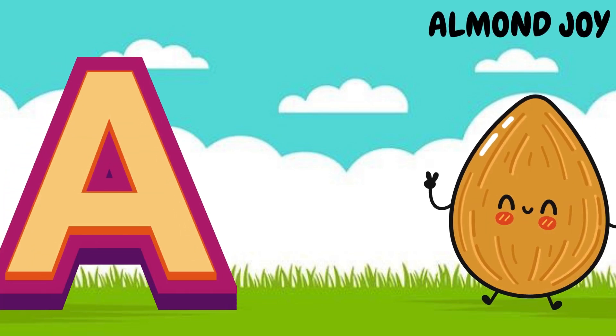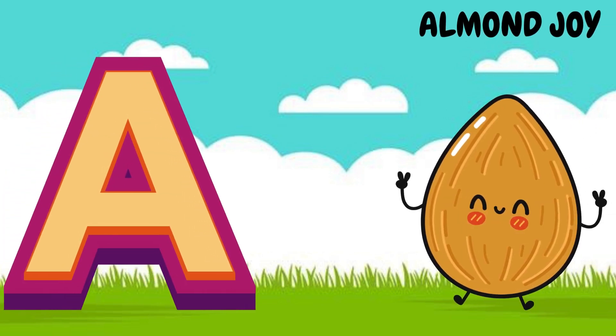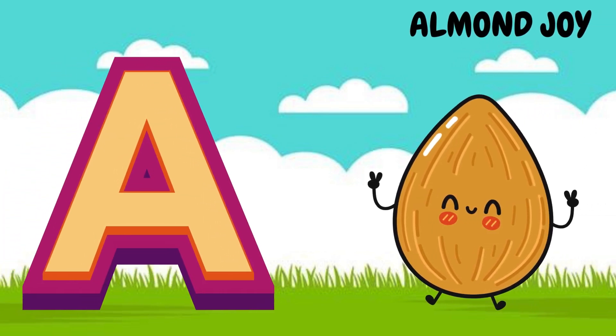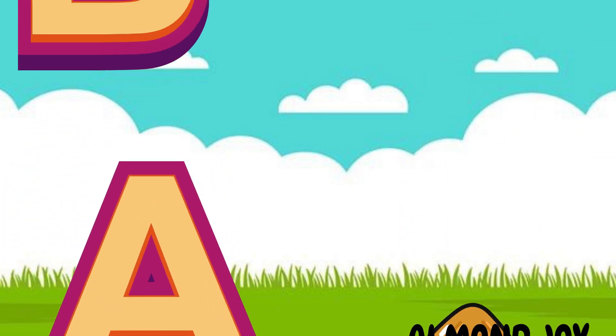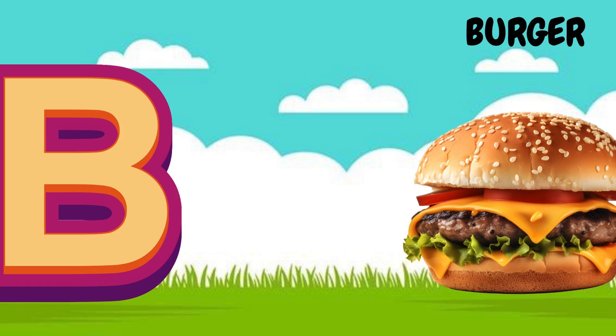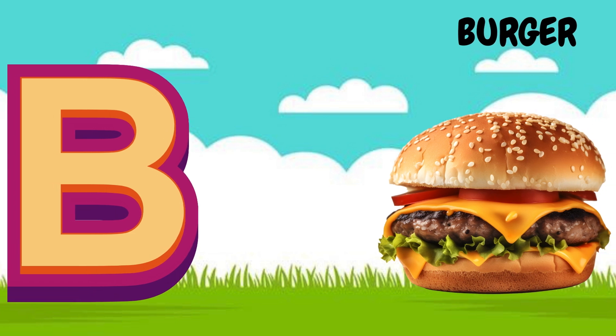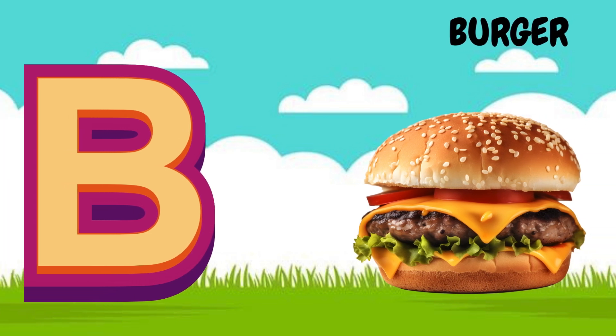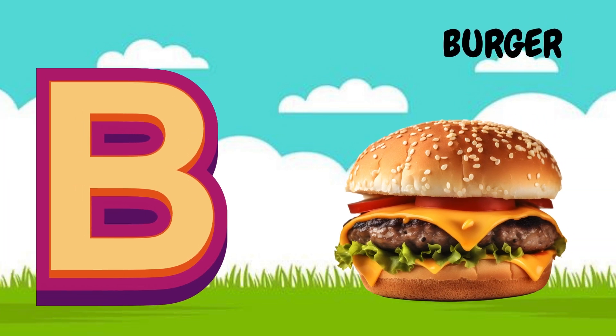A is for Almond Joy. Ah, ah, Almond Joy. B is for Burger. Buh, buh, Burger.